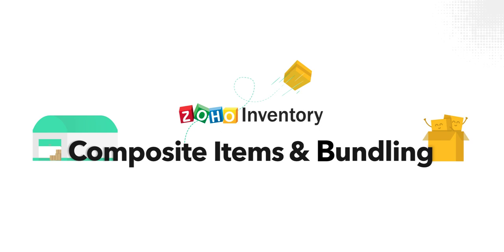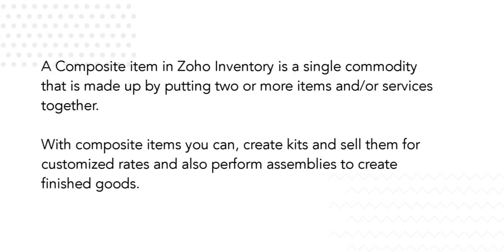This video will give you an idea about composite items and how bundling works in Zoho Inventory. A composite item in Zoho Inventory is a single commodity that is made up by putting two or more items together. With composite items, you can create kits and sell them for customized rates and also perform assemblies to create finished goods.